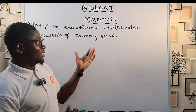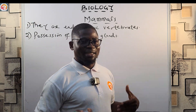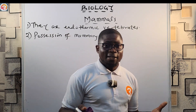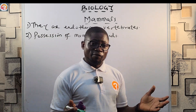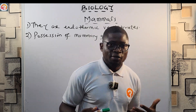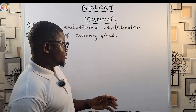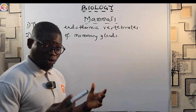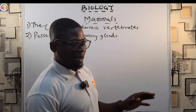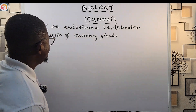Possession of mammary glands is one of the most important and advanced features of mammals. Mammary glands are present in both males and females. They are used for the production of milk to feed their young ones. This is a key characteristic of the class Mammalia.